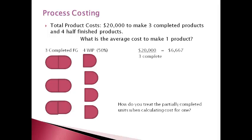The question becomes how to compute the average cost. Should the total cost be divided by the three complete units and ignore the work in process? If so, the three units will get more cost than was actually incurred just for those units and the cost per unit will be high. Should the total cost be divided by the number of pieces? If so, the cost per piece does not consider the cost that is going to have to be incurred to finish the units that are in work in process and is low. Should the total cost be divided by the total number of units that would be complete if all partially completed units were put together as if they were finished?